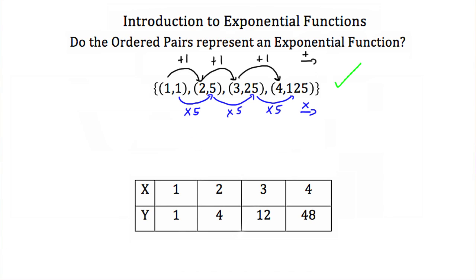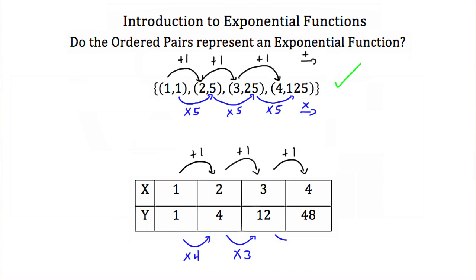Now let's look at this second table. The x values again increase by 1 through addition, going from 1 to 2, 2 to 3, and 3 to 4. The y values go from 1 to 4 (multiply by 4), then 4 to 12 (multiply by 3), then 12 to 48 (multiply by 4 again). That's times 4, times 3, times 4 — not consistent. So these points do not represent an exponential function.